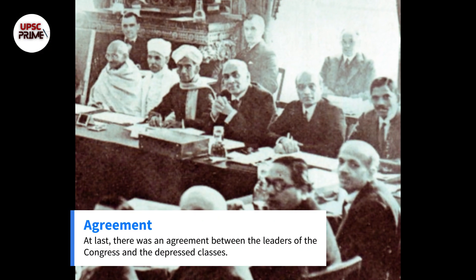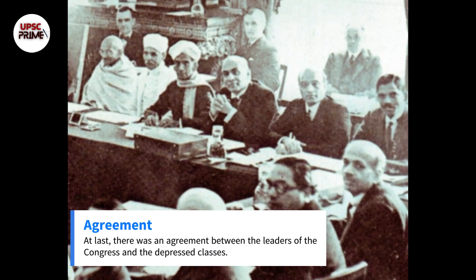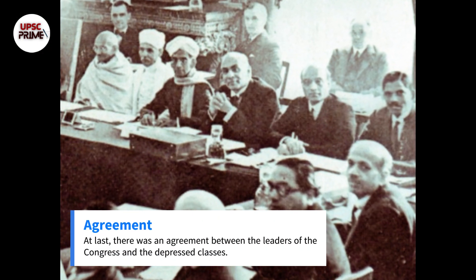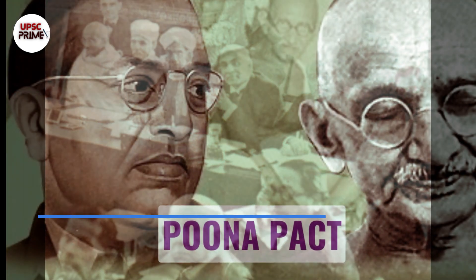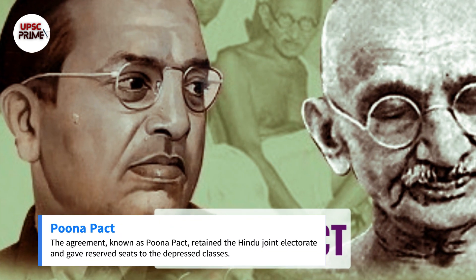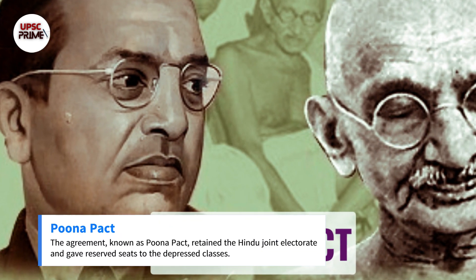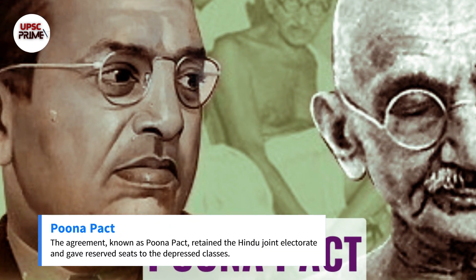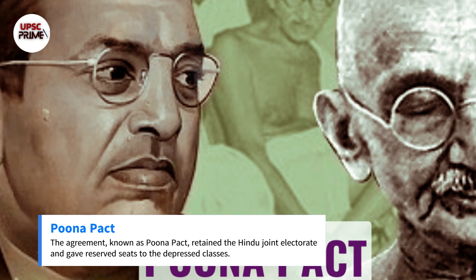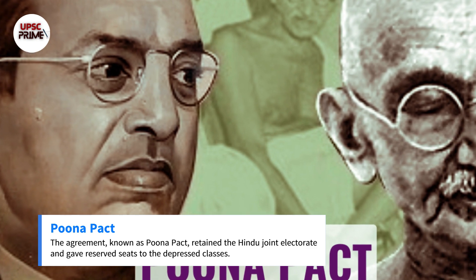At last, there was an agreement between the leaders of the Congress and the depressed classes. The agreement, known as the Pune Pact, retained the Hindu joint electorate and gave reserved seats to the depressed classes.